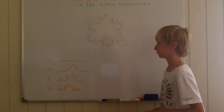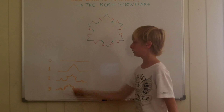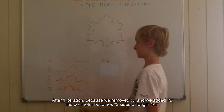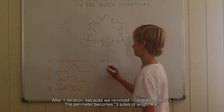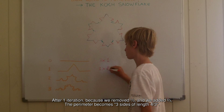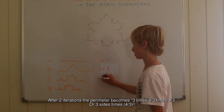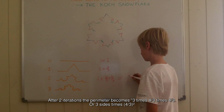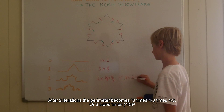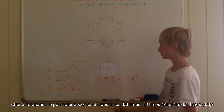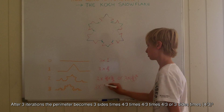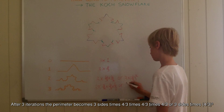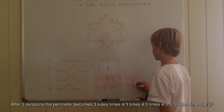So what happens to the perimeter of the figure? This is one side of the triangle. After zero iterations we have three sides of length 1. After one iteration, because we removed 1 third and we added 2 thirds, the perimeter becomes 3 sides times 4 thirds. After two iterations the perimeter becomes 3 times 4 thirds squared. After three iterations the perimeter becomes 3 sides times 4 thirds cubed.